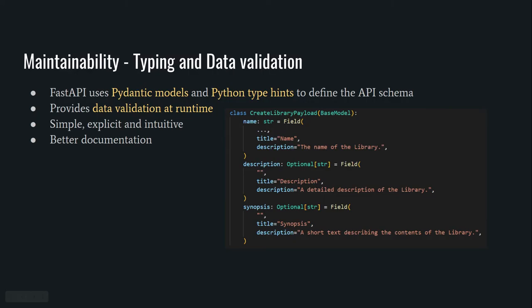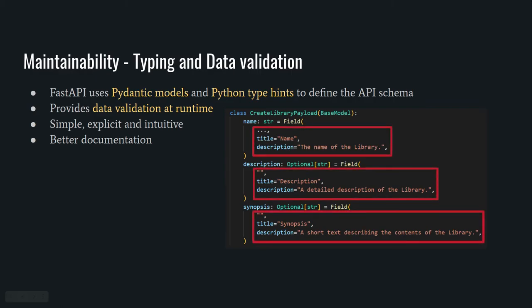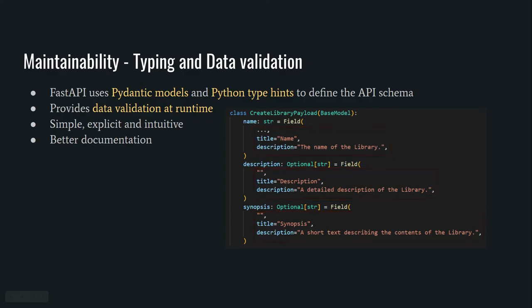FastAPI uses Pydantic models and standard Python type hints to define the API schema. A Pydantic model is just a class that has its variables annotated with type hints and provides data validation at runtime. They are simple, explicit, and intuitive, which makes them play nicely with code editors and especially with our brain. They also help to maintain the API documentation in sync with the code just by providing some additional metadata.